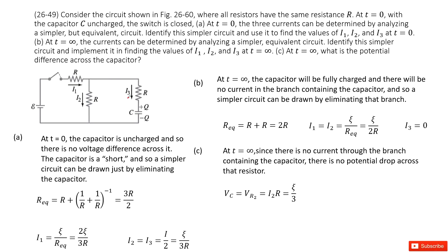So at this instant, for t equal to 0, we have current I1, I2, I3. And this current will go through, just like this capacitor is just like a wire, short connected. So in this case, we can get the equivalent resistance for this circuit.